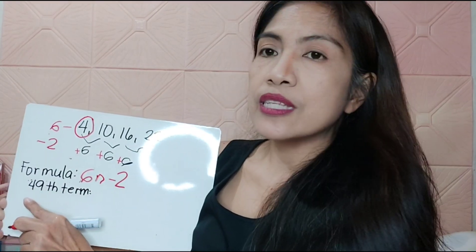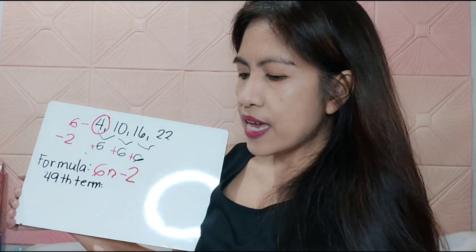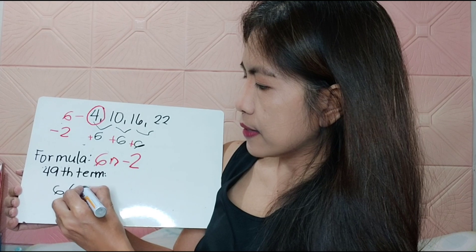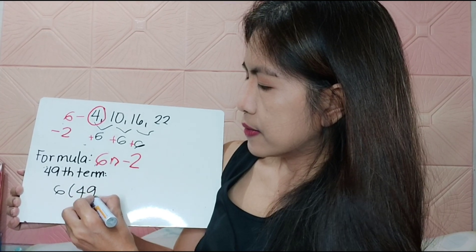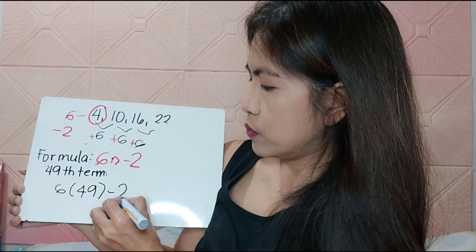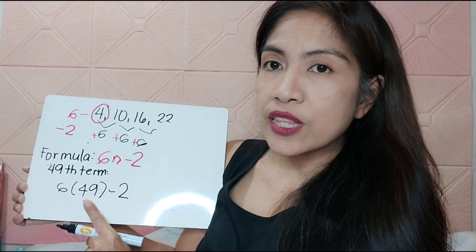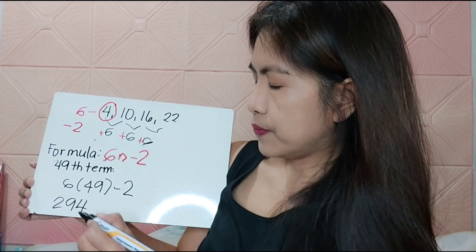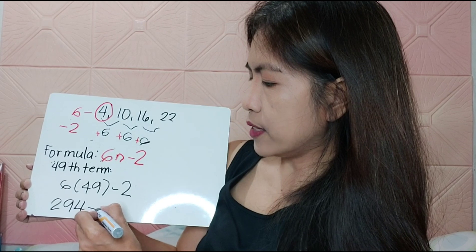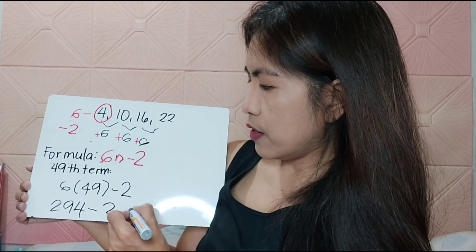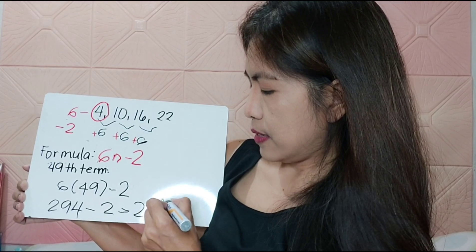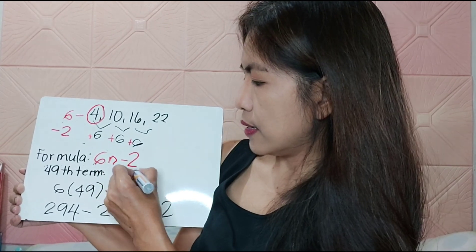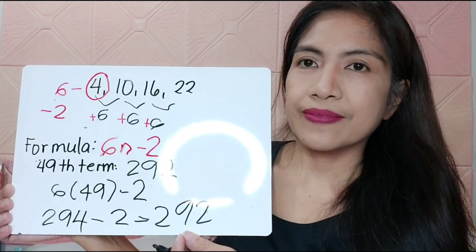We're going to get the 49th term. So 6 times 49 minus 2. 6 times 49 gives us 294. Subtract 2, and it gives us 292. So your 49th term is 292.